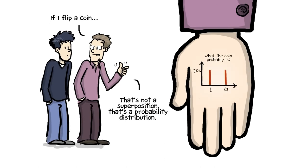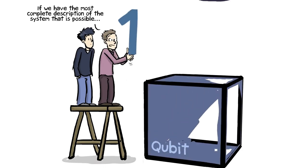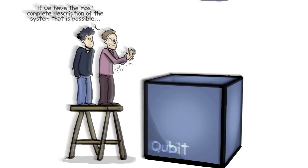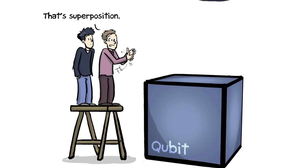That's a probability distribution. But if we have the most complete description of the system that is possible, compatible with quantum physics, like when I prepared the state and when we opened door number two, we don't know whether it was a zero or a one. That's superposition. Because that's really intrinsic randomness instead of probability associated with ignorance.